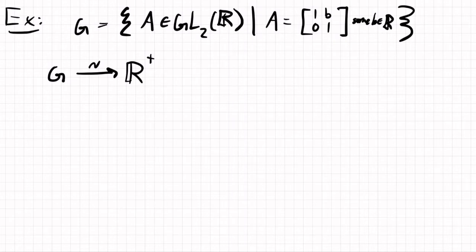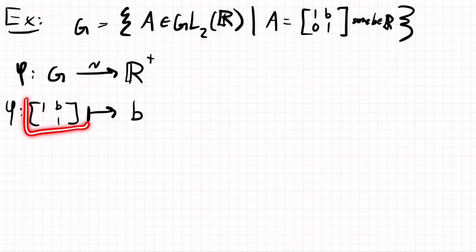So what's the idea here? The idea is the map is going to take the matrix 1, B, 1. And so G, the group operation, is going to be matrix multiplication. And that's going to just bring this to the number B. And so that will be the map. So we'll call this phi, and then phi takes this matrix right here to B.